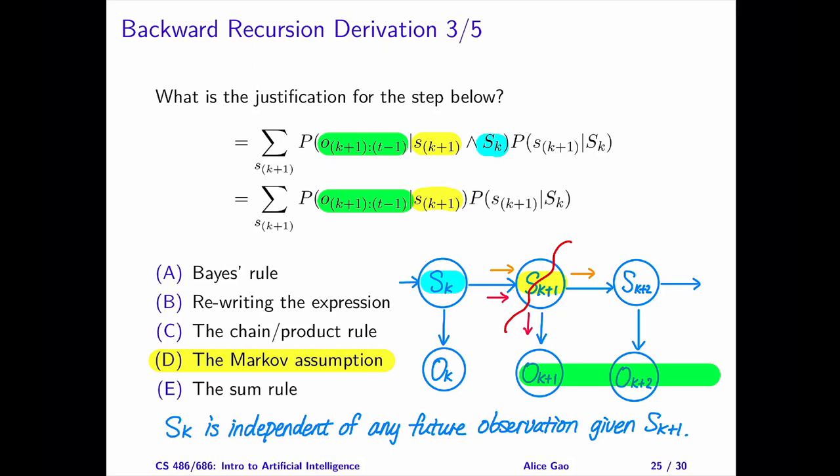You can verify this by applying D-separation on the Bayesian network. The path between s sub k and any future observation has to go through s sub k plus 1. If we observe s sub k plus 1, it is as if we cut the chain at s sub k plus 1, making the state on day k, s sub k, independent of any future observation.